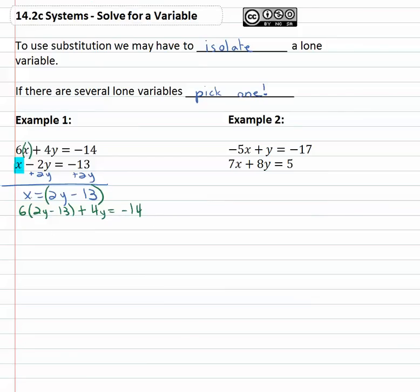Distribute through to get 12y minus seventy eight plus 4y equals negative fourteen. Combine like terms, 16y minus seventy eight equals negative fourteen.